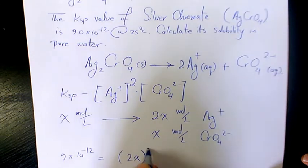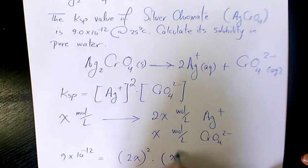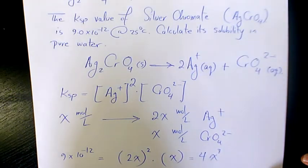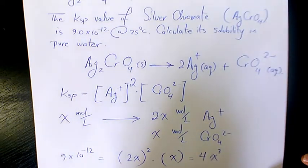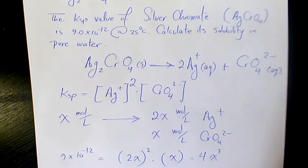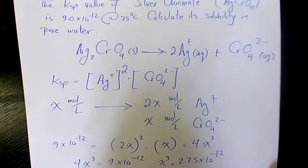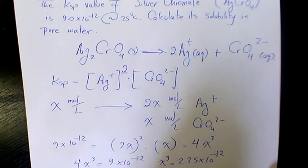2x to the power of 2 times x, that's going to be 4x cubed. So 4x cubed equals to 9 times 10 to the power of negative 12. x cubed will be 9 divided by 4, which is going to be 2.25 times 10 to the power of negative 12. So x will be cube root of 2.25 times 10 to the power of negative 12.